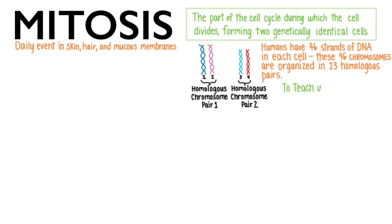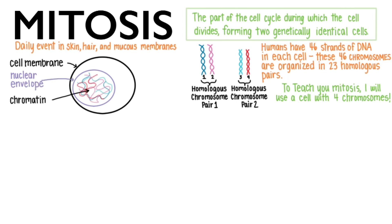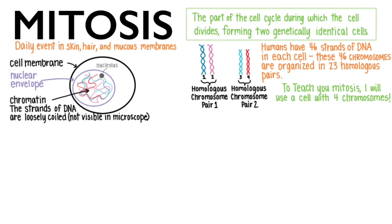So, to teach you mitosis, I will use a cell with four chromosomes organized into two homologous pairs. This is the cell membrane. Here is the nuclear envelope, which contains the chromatin, which is the term we give to the strands of DNA when they are loosely coiled. This loose coiling means the strands are so long and thin they are not yet visible in a microscope. Just one human cell contains about two meters of linear strands of DNA. Here is the nucleolus.